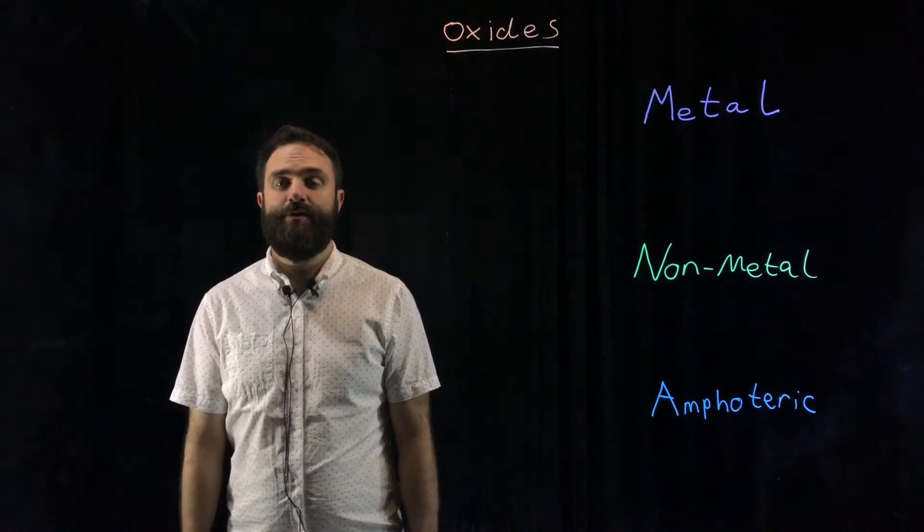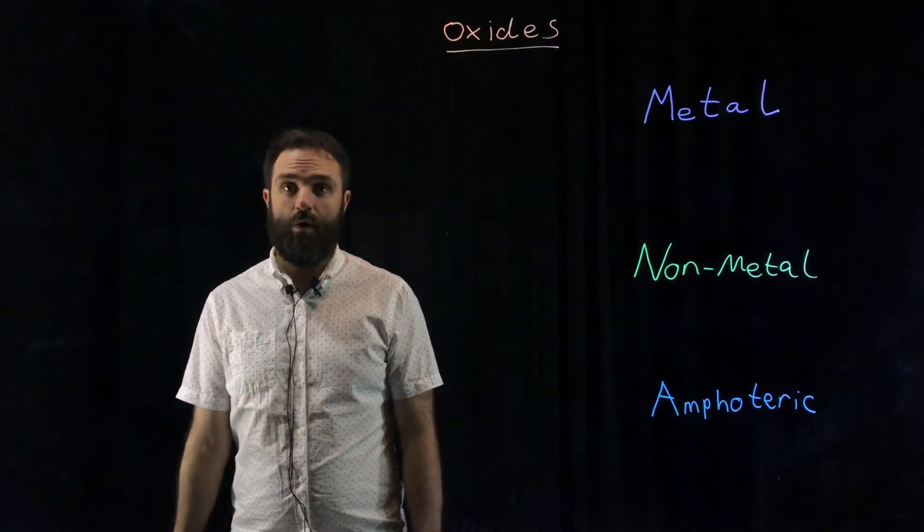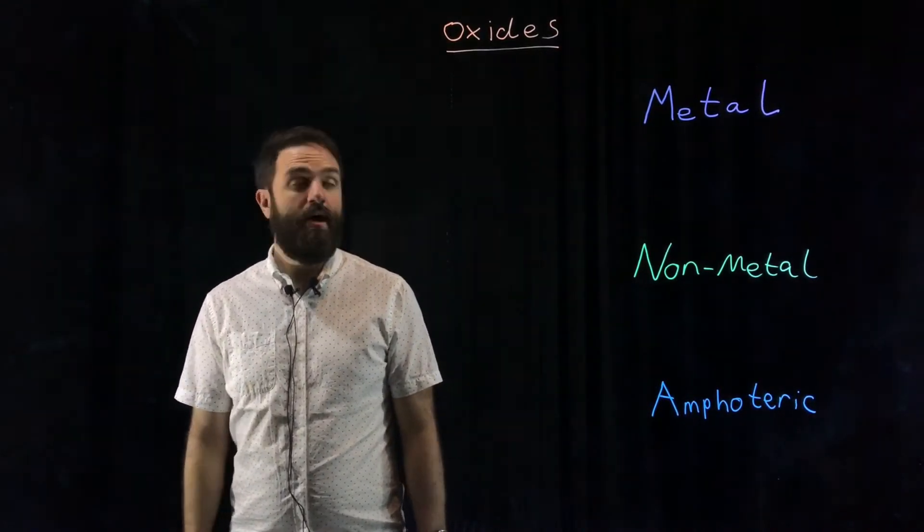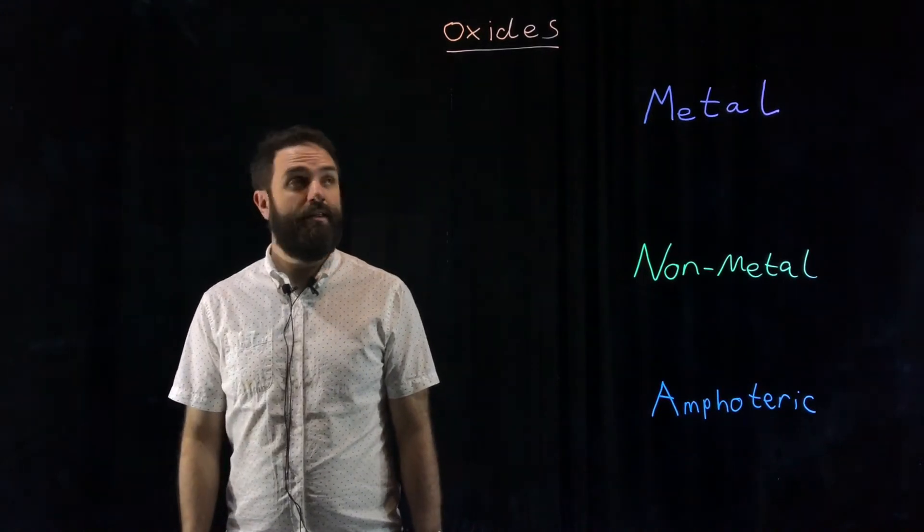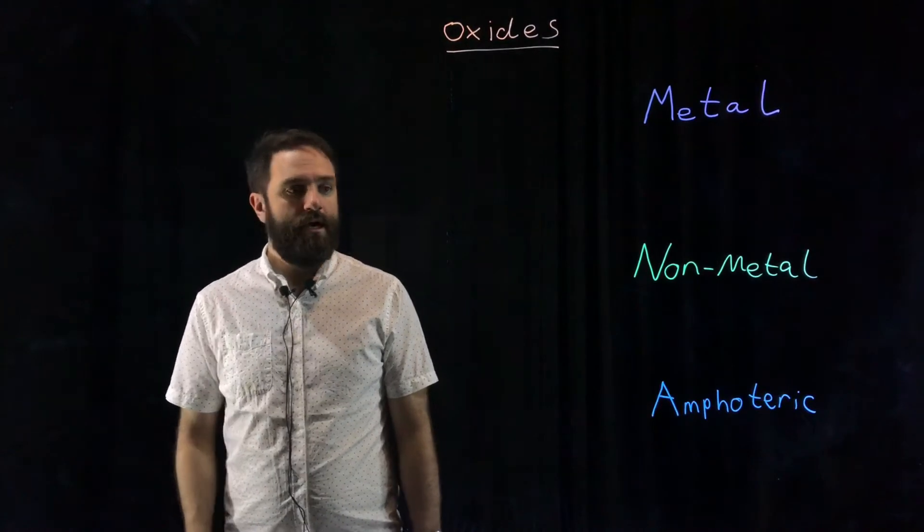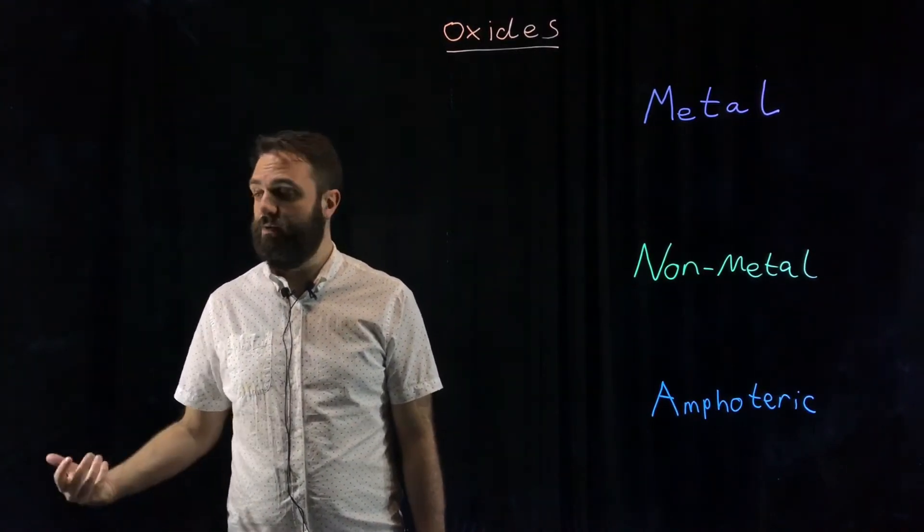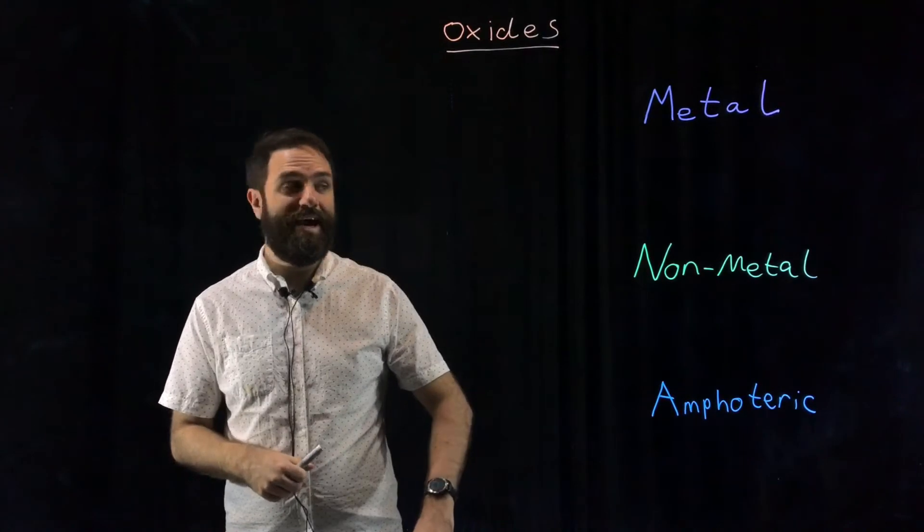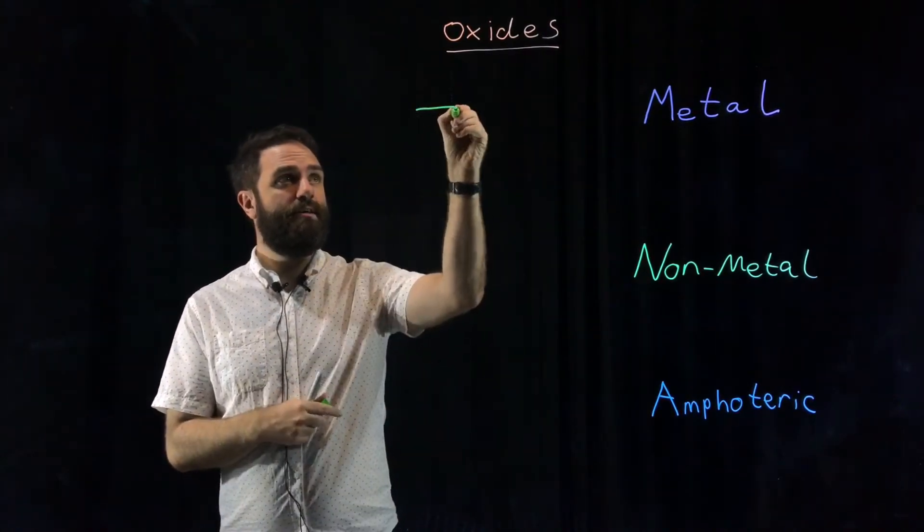When it comes to the pH of substances, there are four classifications and it depends on the oxides and what they are formed from. The first one is pretty straightforward: if you have something with a pH of seven, we say it is a neutral substance.